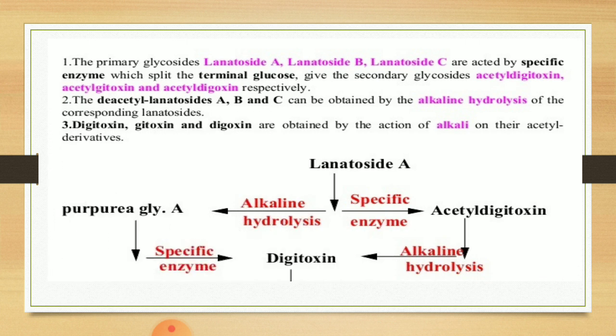Now, hydrolysis of these glycosides. The primary glycosides lanatoside A, lanatoside B, and lanatoside C are acted upon by a specific enzyme which splits the terminal glucose, giving the secondary glycosides acetyl-digitoxin, acetyl-gitoxin, and acetyl-digoxin respectively. This means the specific enzyme removes the terminal glucose molecule. So lanatoside A → acetyl-digitoxin; lanatoside B → acetyl-gitoxin; lanatoside C → acetyl-digoxin.